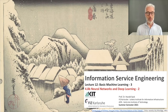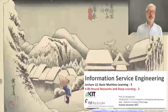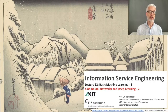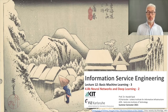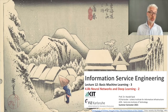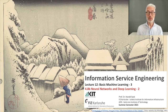Welcome to Information Service Engineering. This is lecture number 12, Basic Machine Learning Part 3. In this part of the lecture we are going to continue neural networks and deep learning. In the last section we learned about perceptrons and we learned that single-layer perceptrons have a drawback: they can only be applied successfully on problems which are linearly separable.